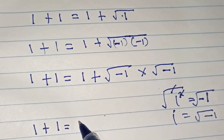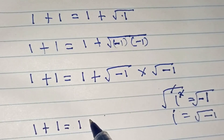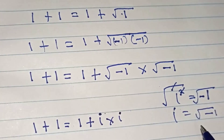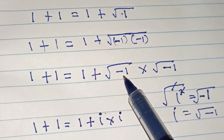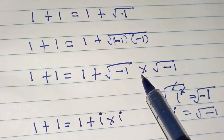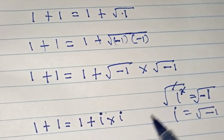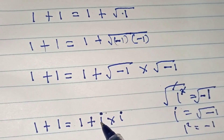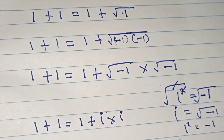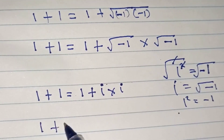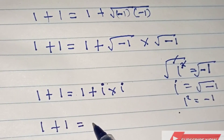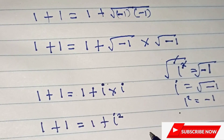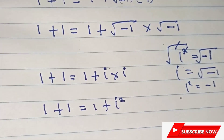Therefore one plus one equals one plus i times i, because the square root of negative one is i. Remember, i times i equals i squared, and i squared equals negative one.